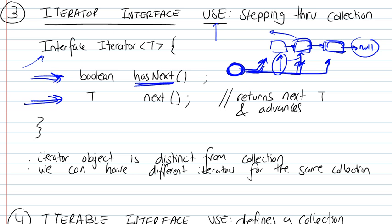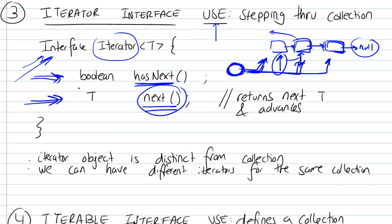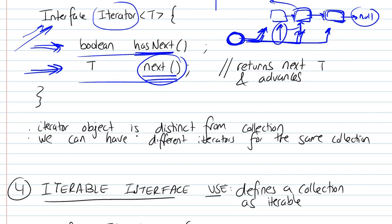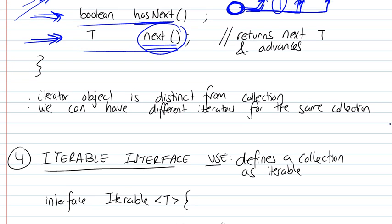The second function is the next method, and that method basically just returns the next element. So instead of you handling all of the details and the nitty-gritty behind stepping through your list, you leave that to someone who will define the iterator object — which actually implements the iterator interface — and they will define these two functions. The iterator object allows us to step through and iterate through a collection of elements.